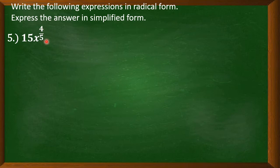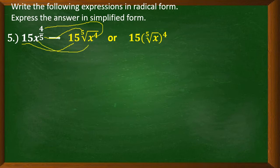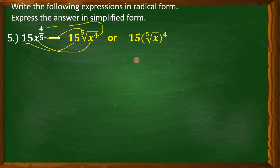Next example: 15x to the power of four fifths. Only the variable x is being raised to the power of four fifths, so 15 is written outside the radical sign. We have 4 as the exponent of x and 5 as the index. This is read as 15 times the fifth root of x to the power of 4, or equivalently, 15 times the quantity of the fifth root of x, raised to the power of 4. They are just the same.